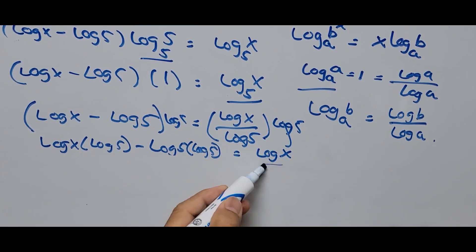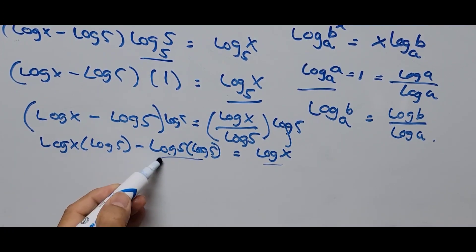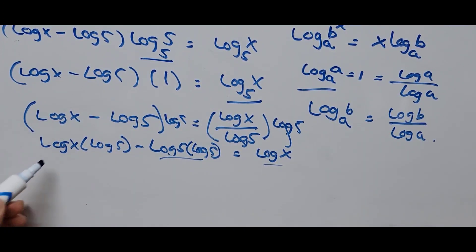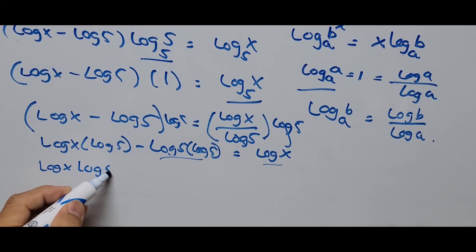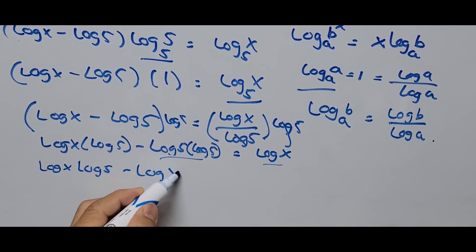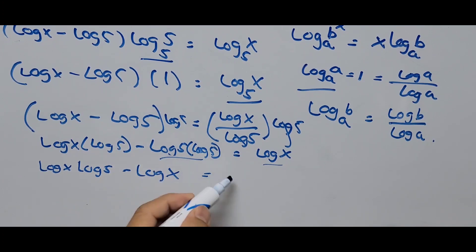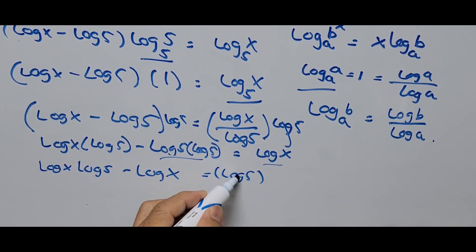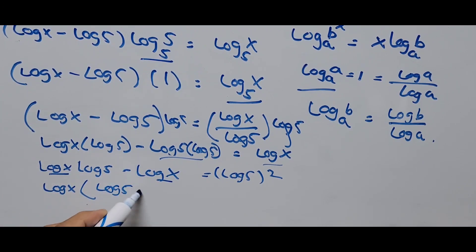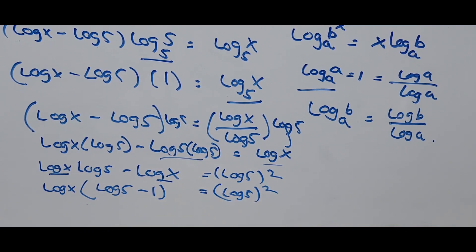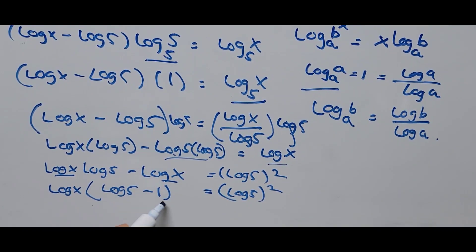We simplify further by transposing log X to the left side and the other term to the right side. The equation becomes: log of X times log of 5 minus log of X equals log of 5 squared. Factoring out log of X on the left: log of X times the quantity (log of 5 minus 1) equals log of 5 squared.